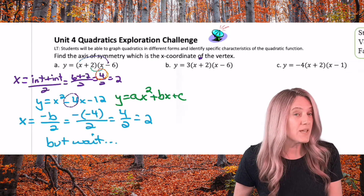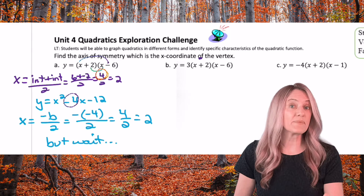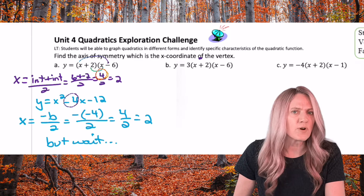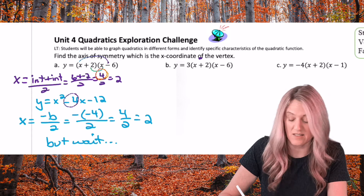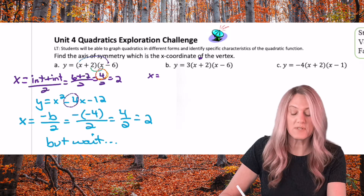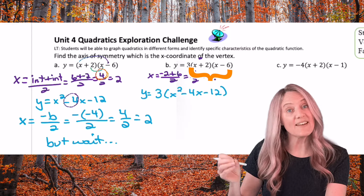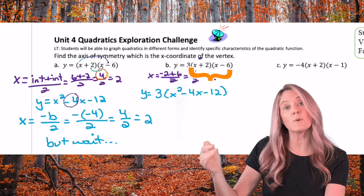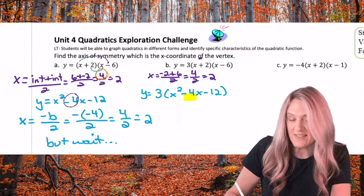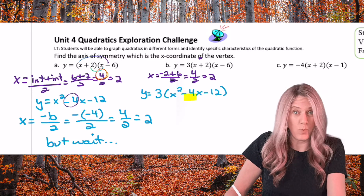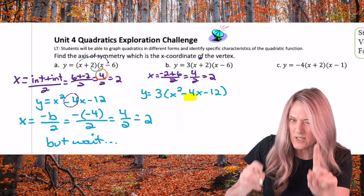But wait — let's look at part b, because there's a little piece we don't have plugged in yet. This one has a vertical stretch by a factor of 3. In factored form that doesn't really affect our x-intercepts — they're still negative 2, 0 and positive 6, 0 — so I would still get the axis of symmetry as intercept plus intercept divided by 2. But now let's look at standard form. We still have that negative 4 in the middle, and the opposite of 4 is 4 divided by 2, which is 2. But now I have to multiply in the 3, so keep that in mind.